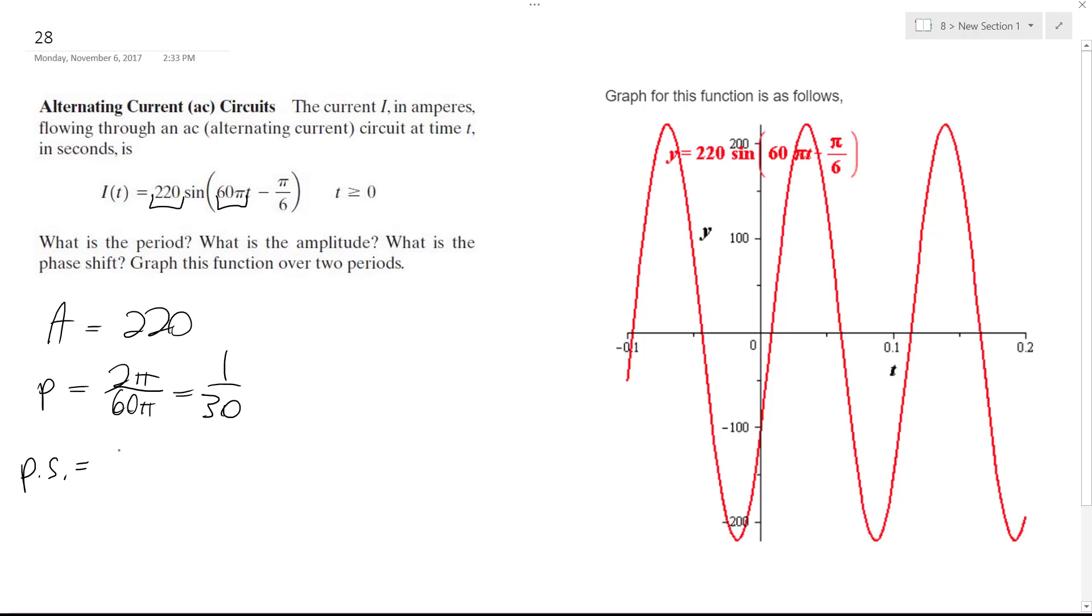And then the phase shift is just going to be omega, or excuse me, theta divided by omega. So in this case theta is the pi over 6. So it's going to be pi over 6 divided by the 60 pi.